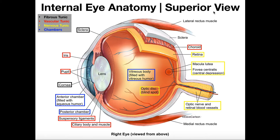We're actually looking at a superior view right here. This is the eyeball — it's been removed and you're looking at it from the top. They've cut it with a transverse plane, taking the top half off, so you're looking down at this from above. This is actually the right eye. The way you'd know it's the right eye from the top is that the optic nerve does not go directly back — it goes medially, toward the center of the body.